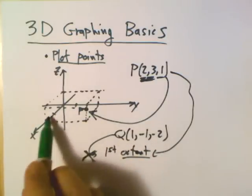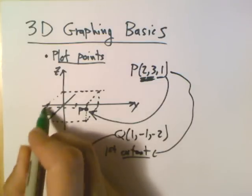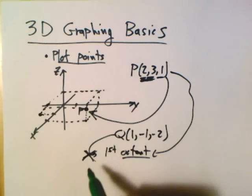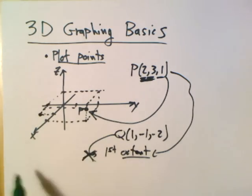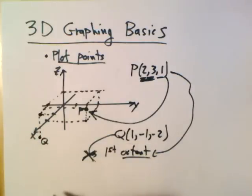So, it's gonna be 1 unit in the x direction, minus 1 in the y, so that's gonna be sort of over to here. So, it's a fairly small rectangle, drawn as a parallelogram again. And then down 2 units, somewhere around here. So, Q's something around like that.